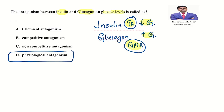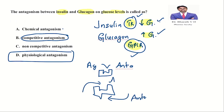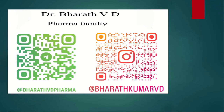The rule for physiological antagonism: receptors must be different, and actions must be opposite — one causes hypoglycemia, the other hyperglycemia. Chemical antagonism involves a chemical reaction, e.g., antacids neutralizing HCl, or heparin and protamine sulfate. Competitive antagonism: agonist and antagonist compete for the same site. Non-competitive antagonism: antagonist binds at a different site from the agonist. So the answer here is physiological antagonism.